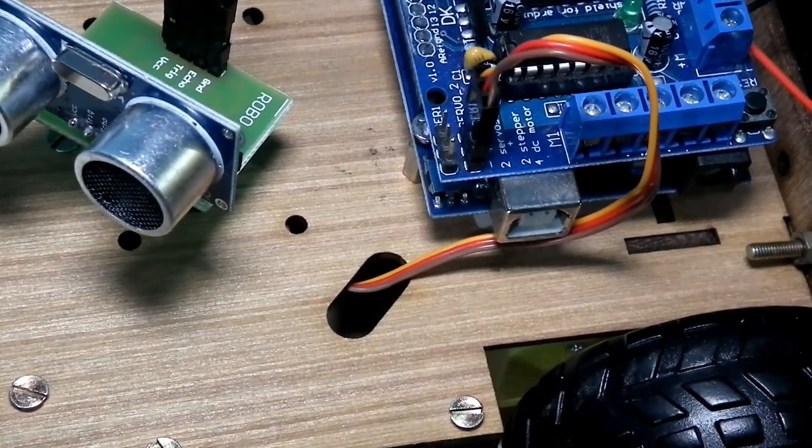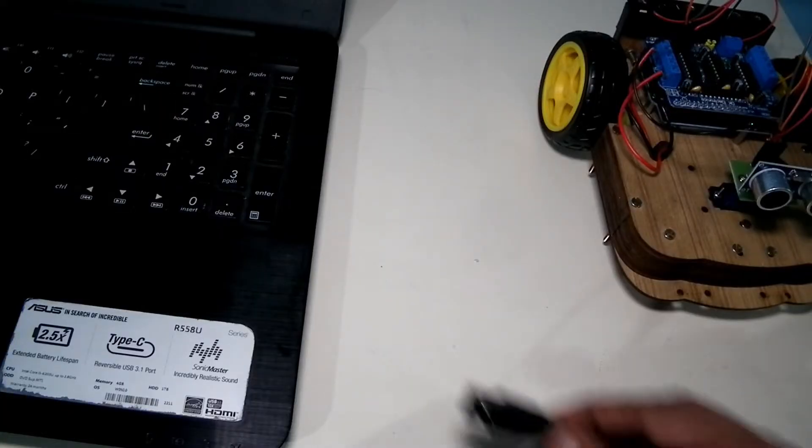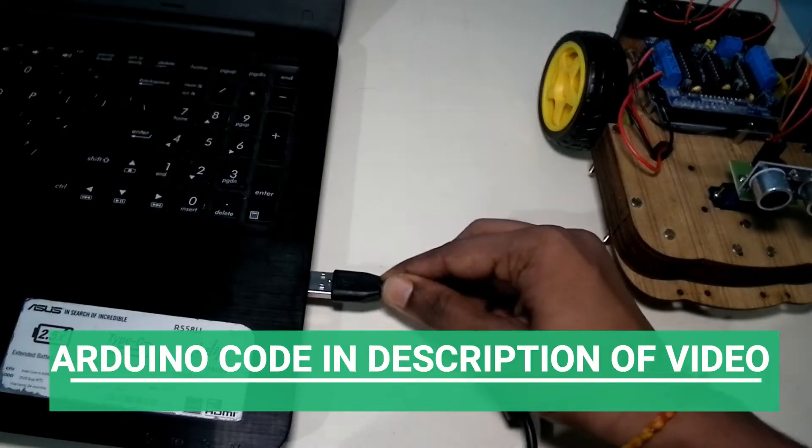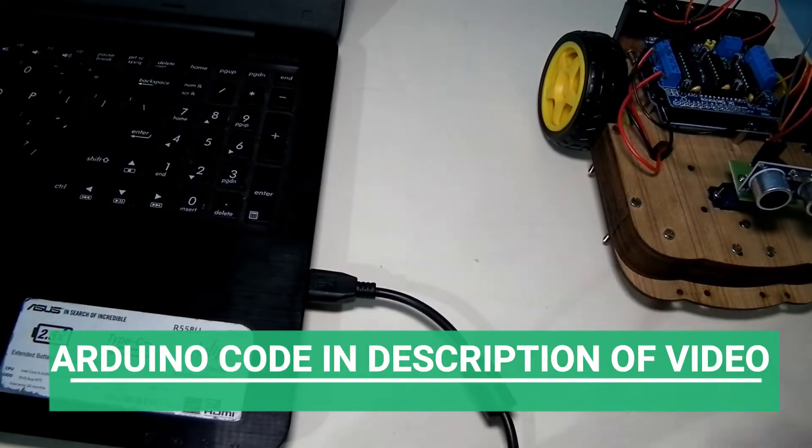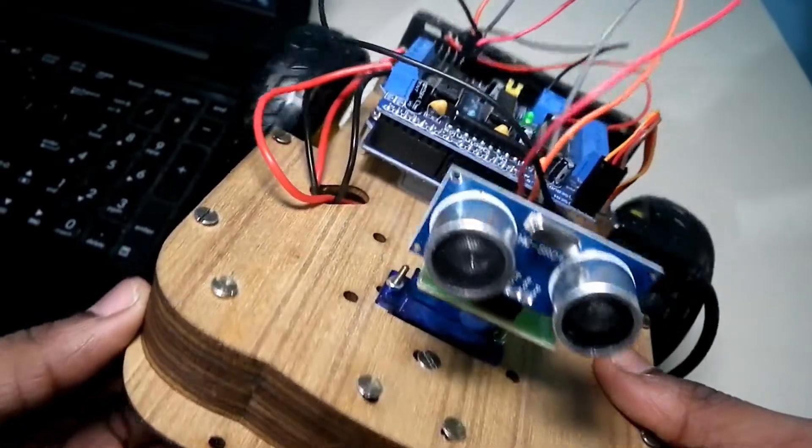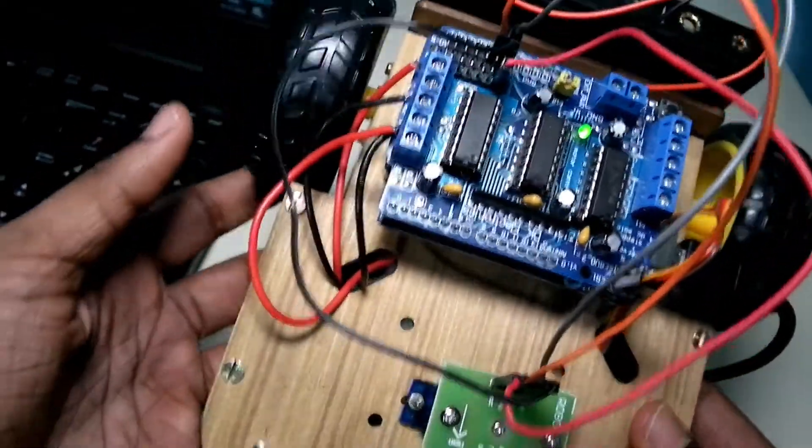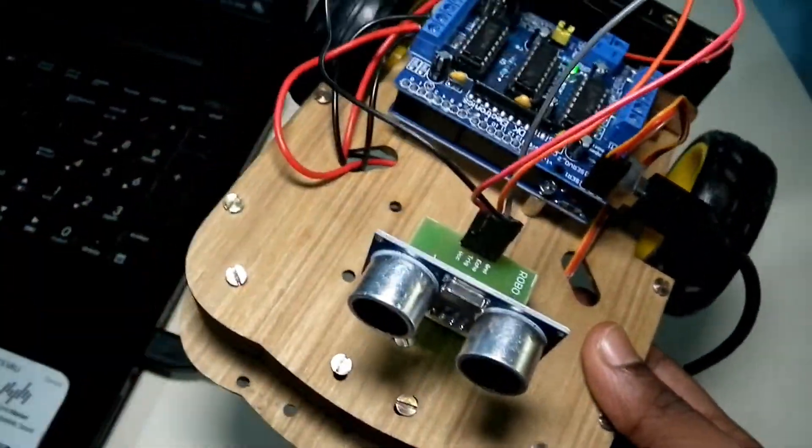Now I am going to connect the Arduino to my laptop and upload. As you can see, after I uploaded the forward robot motion code, both the wheels are moving forward.